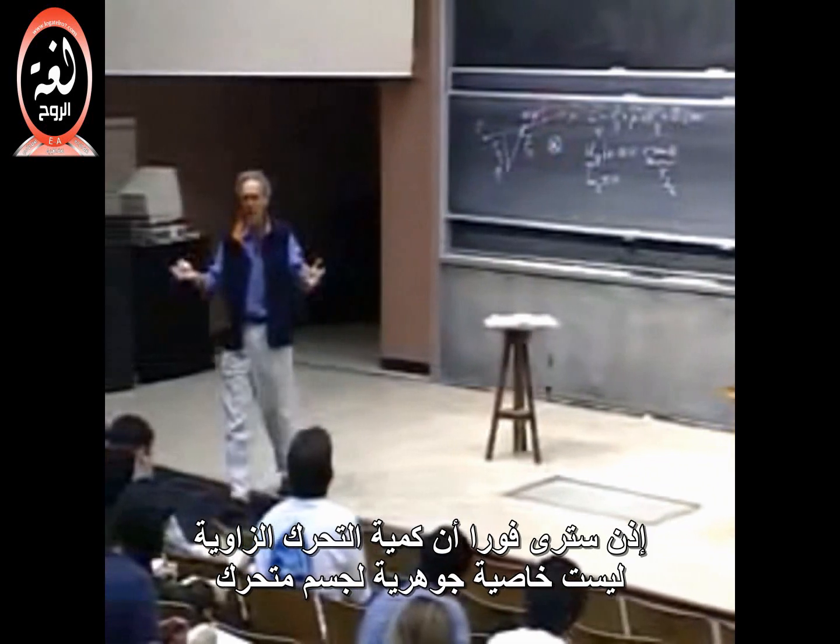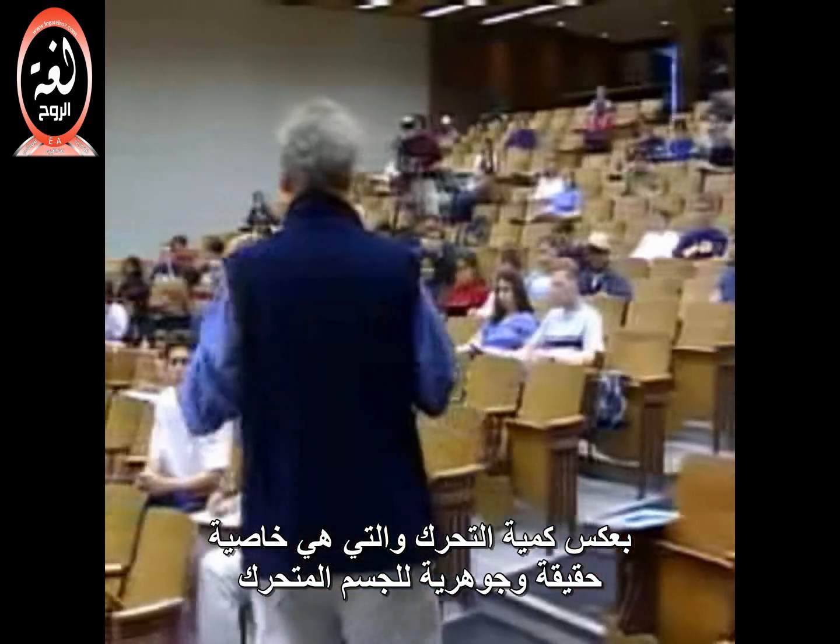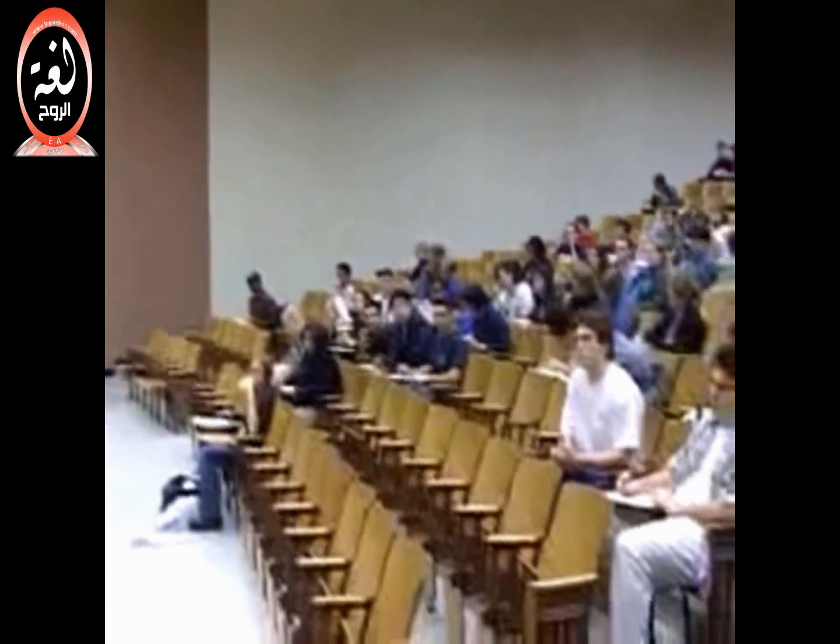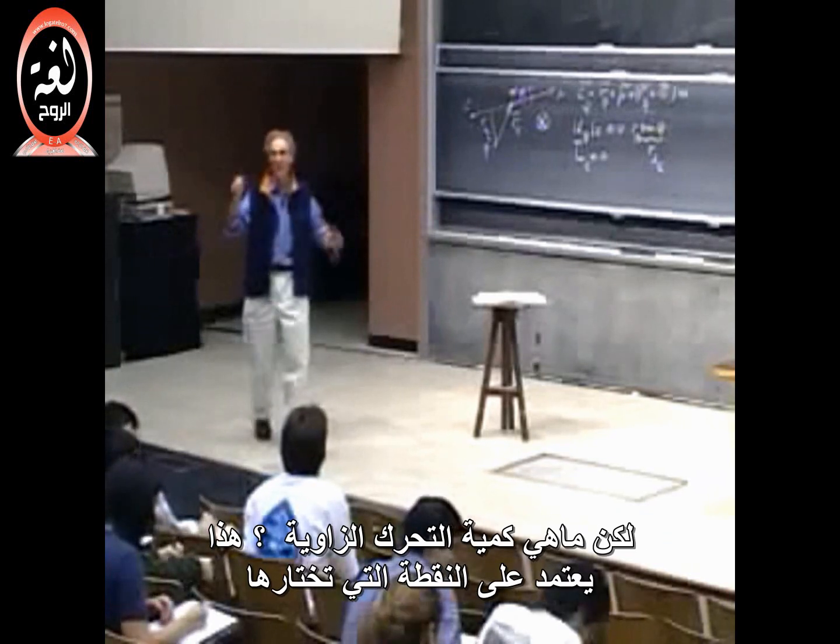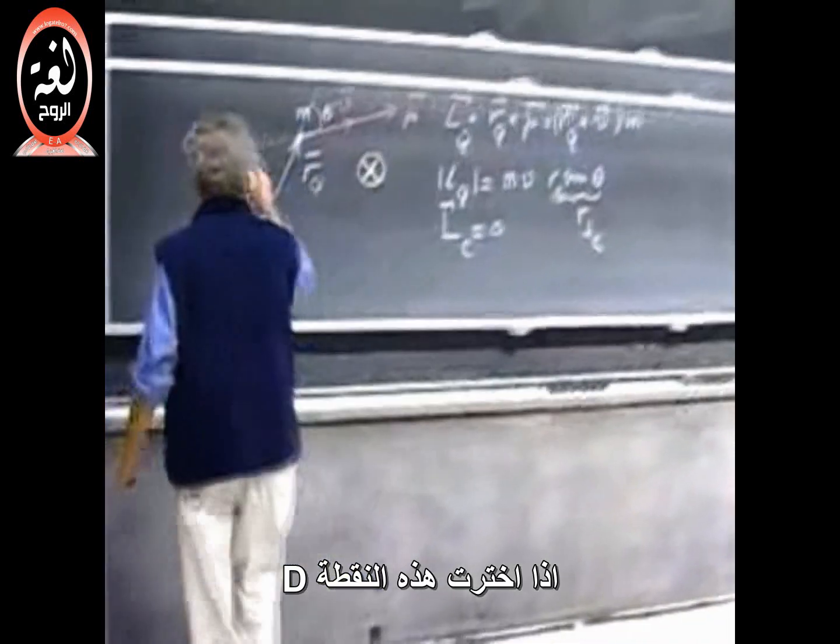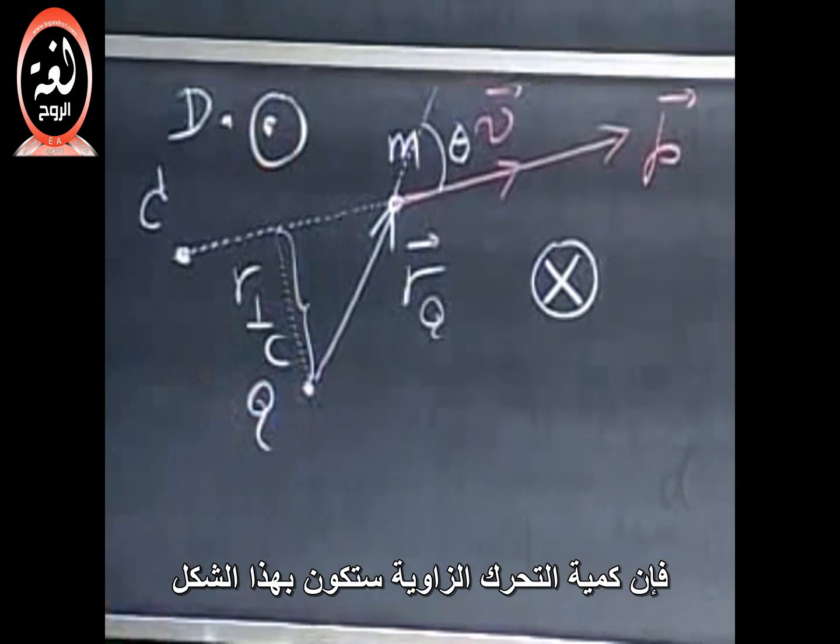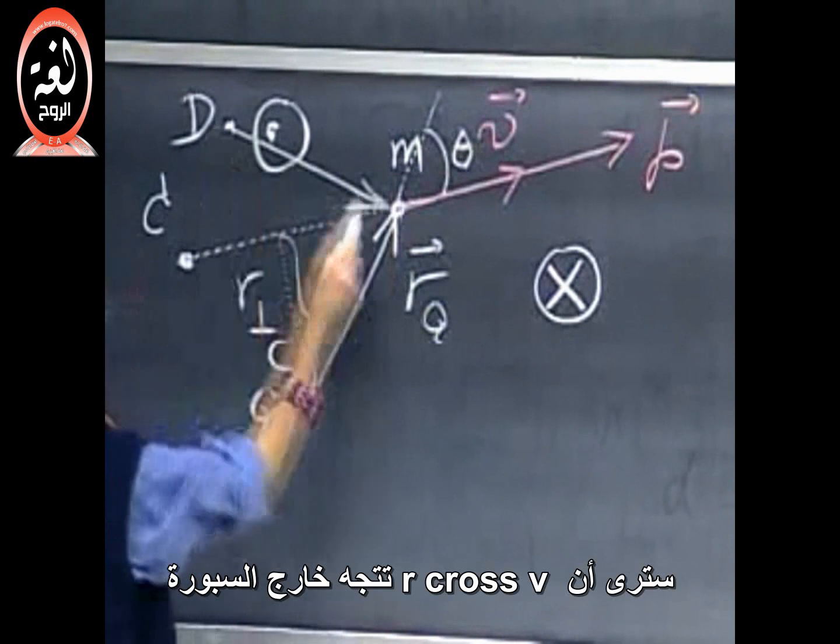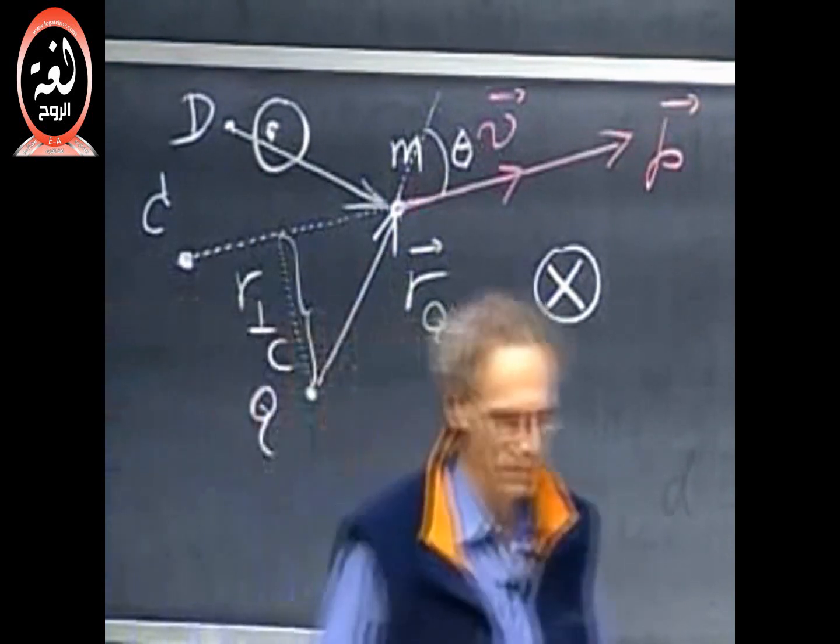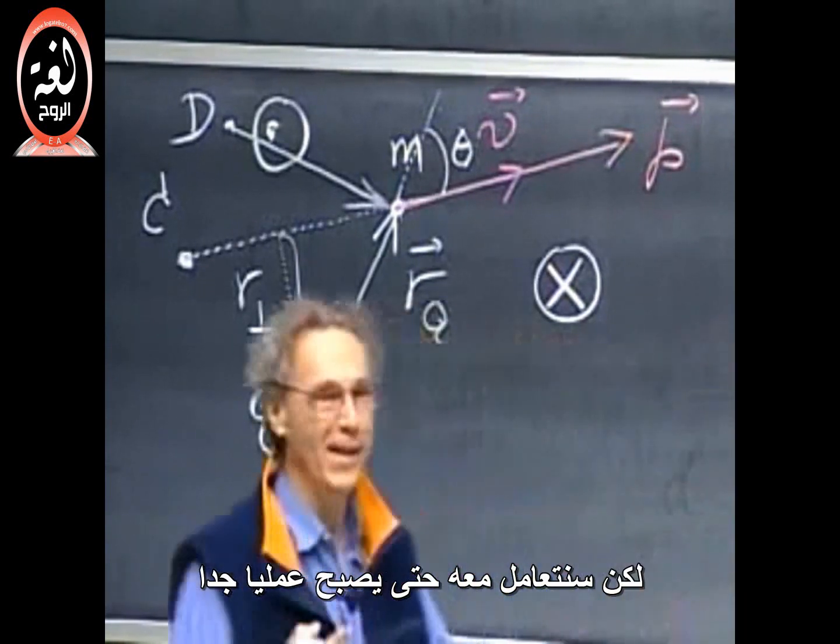So, you immediately see that angular momentum is not an intrinsic property of a moving object, unlike momentum, which is an intrinsic property. If you sit there in 26.100, you see an object moving with a certain velocity, it has a certain mass, you know its momentum. What the angular momentum is depends on the point that you choose, on your point of origin. If you had chosen this point D, then the angular momentum would even be this way, because when you put here the position vector in, then you see R cross V is now coming out of the blackboard. And this is why angular momentum is such a difficult concept. But we will massage it in a way that it will be very useful.